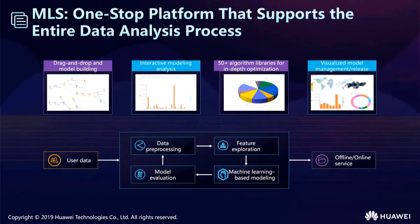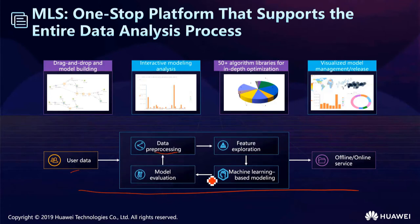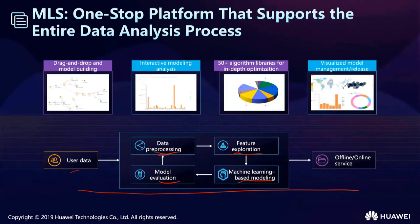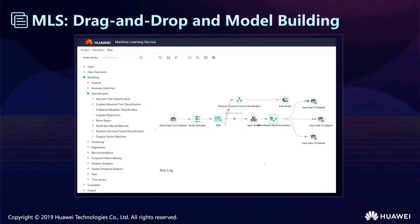MLS only needs the user's data and user's model, and then it can finish data processing, feature exploration, machine learning model building, and model evaluation. This is the online service workflow — you do data processing, then feature processing and model-based learning, then model evaluation. If the model evaluation does not perform well, you adjust the data processing in a cycle until your model performs very well. You can provide either offline or online data, and it can handle both offline and online data services.